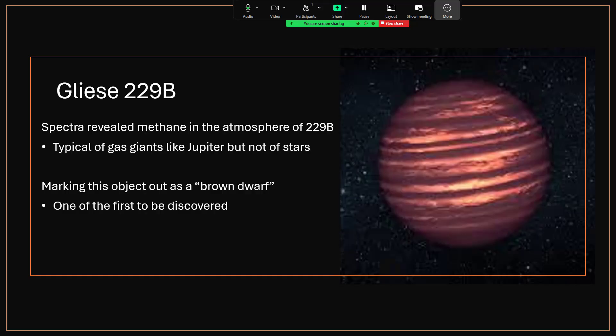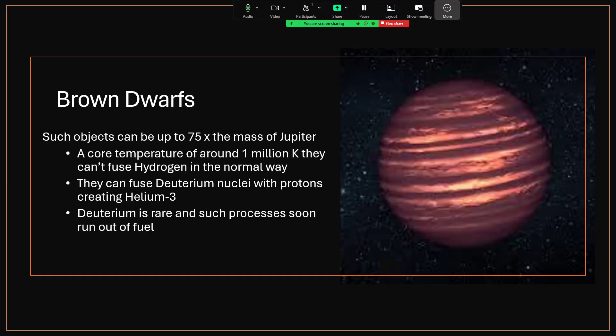And as a brown dwarf, this was one of the first such objects to be discovered. Now brown dwarfs are objects between gas giants and stars themselves. And we class anything from 13 to 75 times the mass of Jupiter as a brown dwarf.